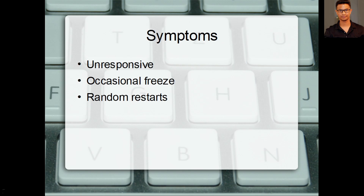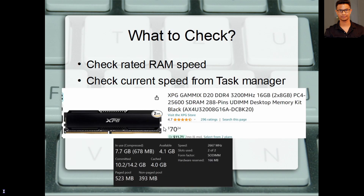So what are the symptoms of RAM overclocking failure? Your computer would be unresponsive, or when you're trying to move your mouse cursor around it will freeze occasionally. Your computer might randomly restart. In the picture here you can see there's an XPG RAM rated for 3200MHz. That means when you turn on the XMP profile it's going to run at 3200MHz speed. But in case you have a RAM failure, it will restart automatically, and when you check the RAM speed you'll see it's running at lower than the rated frequency.